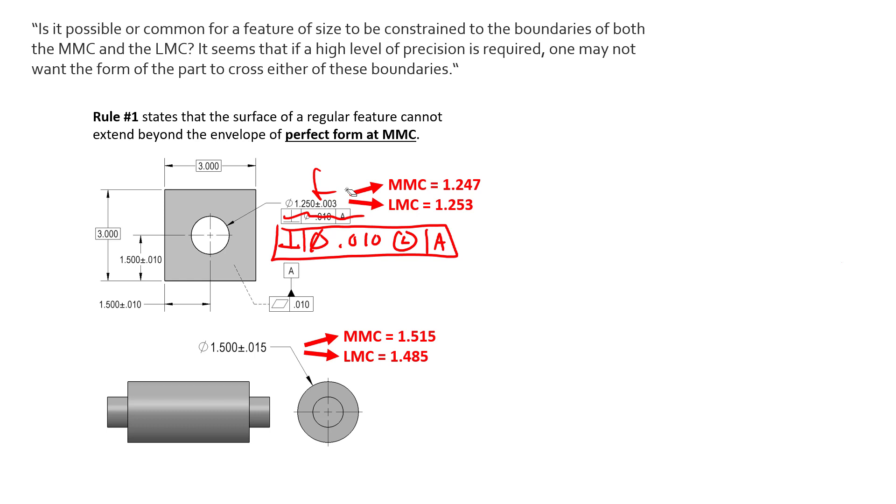Now what this is saying is when we check this size, we are holding perfect form at LMC. And if anyone's familiar with our LMC lesson, you know that you really only use the LMC modifier when we are restricting minimum wall thicknesses